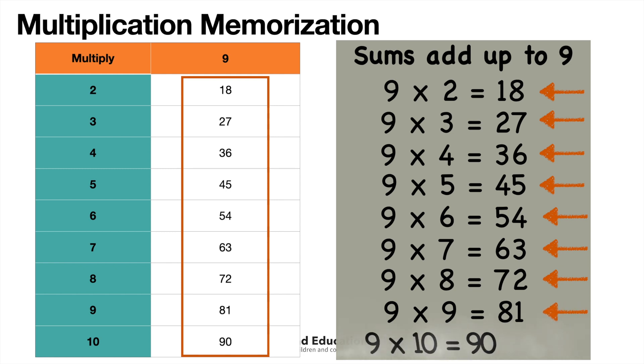And then finally, let's look at 9 times 10. We know that 9 times 10 is 90. Obviously, 9 plus 0 is equal to 9. A great way to remember your 9 times tables.